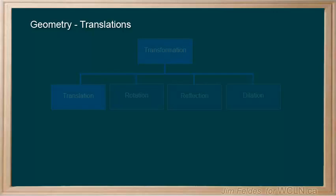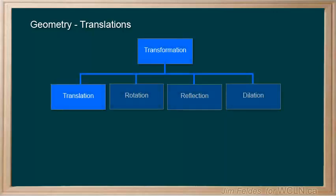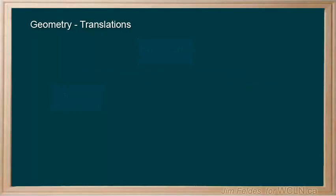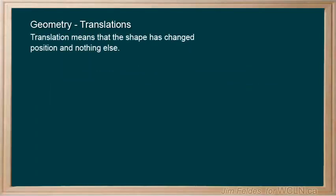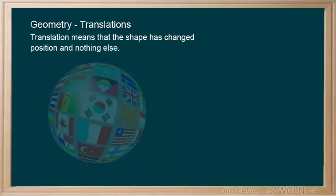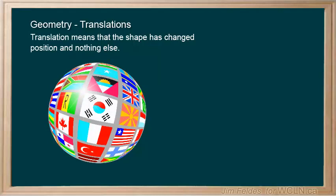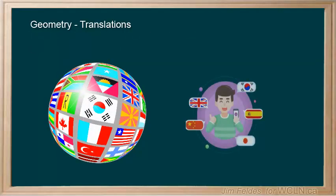We will explore each type of transformation in more detail starting with translations. Translation means that the shape has changed position and nothing else. Perhaps remember that if you changed your place on Earth, you would be the same, but your position would be different, and you'd likely need a translator.